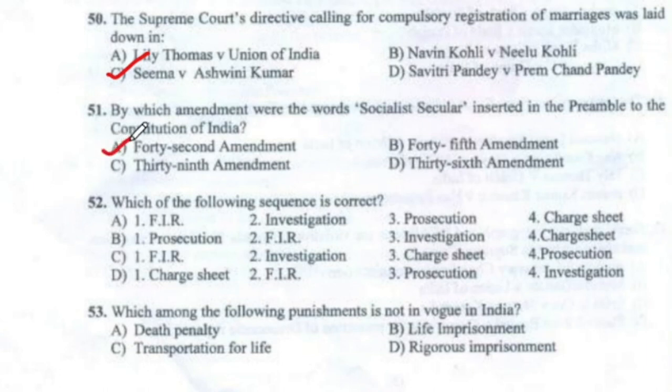Question 52: Which of the following sequences is correct? The correct answer is Option C — first there is an FIR, then investigation, then a charge sheet filed, and then prosecution if the accused is found guilty.